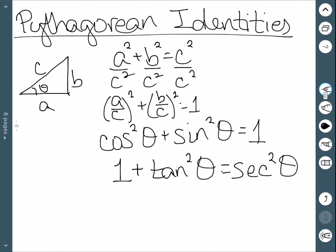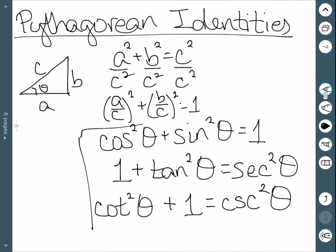That's our second identity. For the third, we can divide the original equation through by sine. Cosine over sine is cotangent. So we have cotangent squared. Sine squared over sine squared is 1. And 1 over sine is cosecant. So we have cosecant squared theta. And these are our three Pythagorean identities.